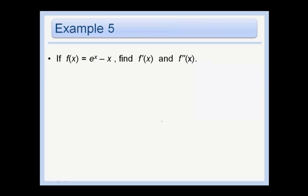Okay, so if we have f(x) equals e to the x minus x, find f prime of x and find f double prime. So f prime of x, remember the derivative of e to the x is just e to the x and the derivative of x is just 1.